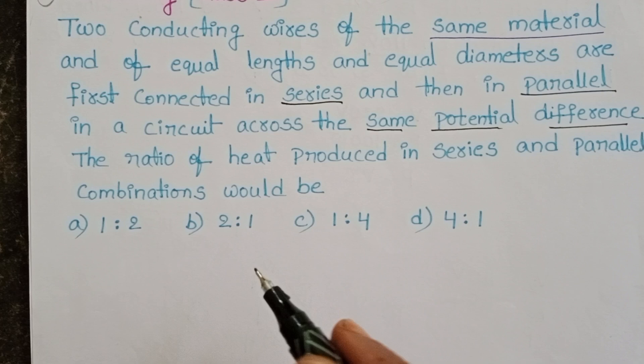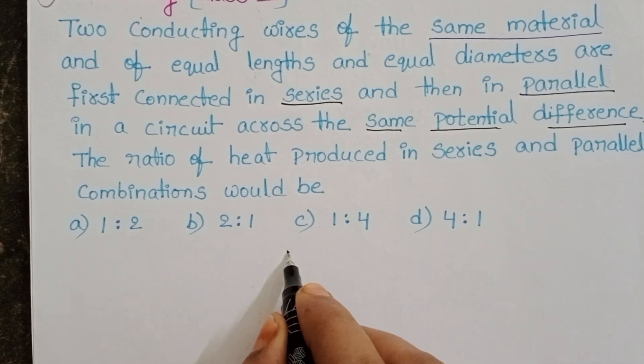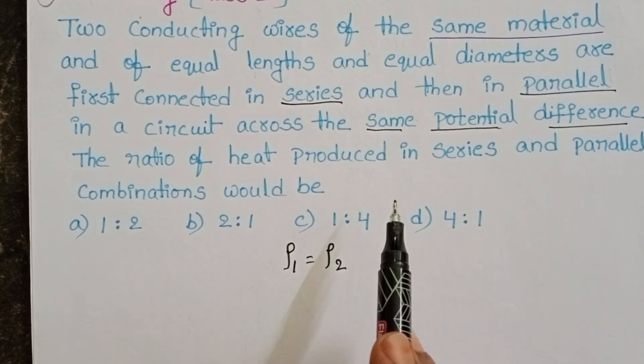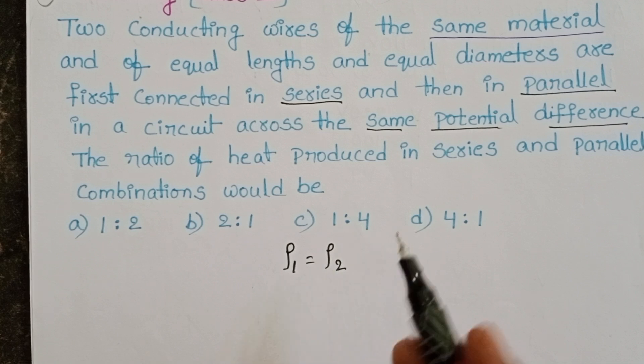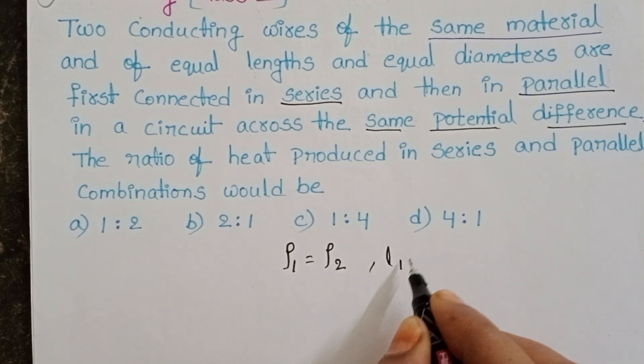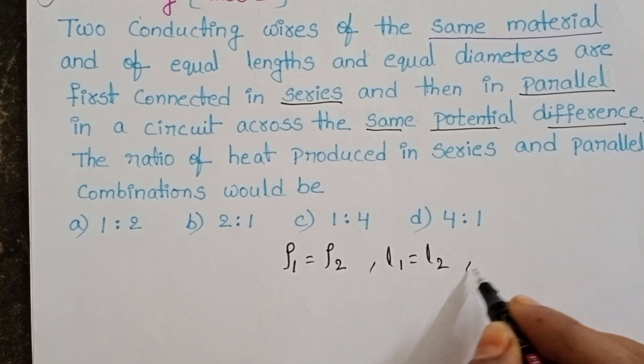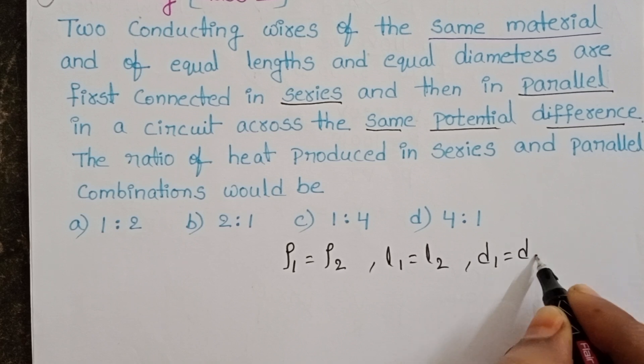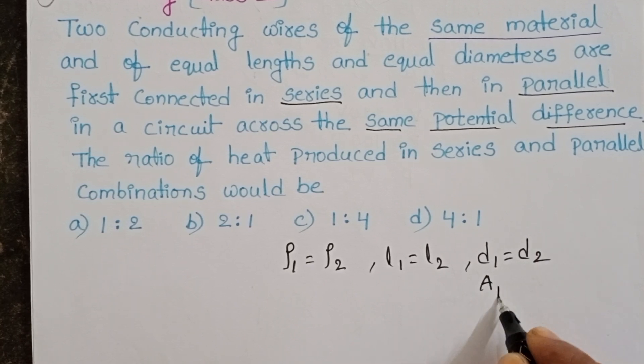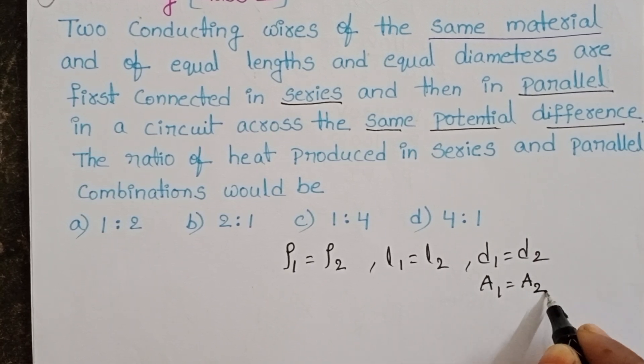In the given question, two conducting wires of the same material. Same material means resistivity of two resistors are same and also length same, diameters also same. When diameters are same, then area of cross section of two resistors also same.